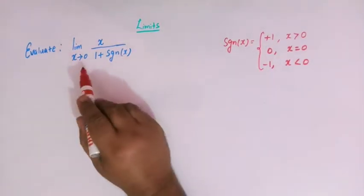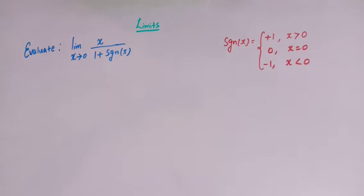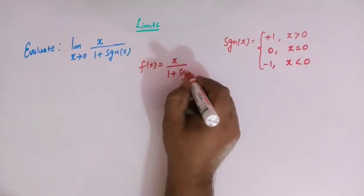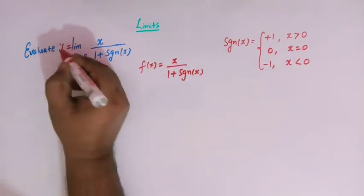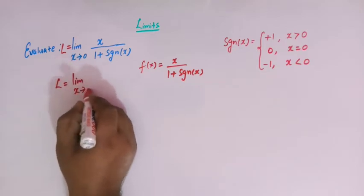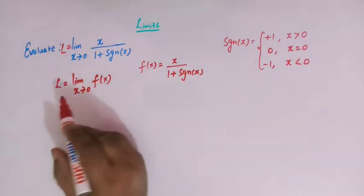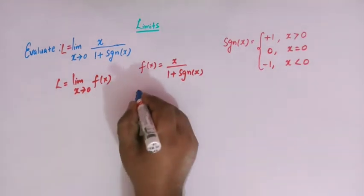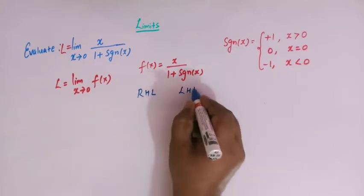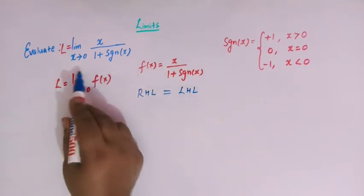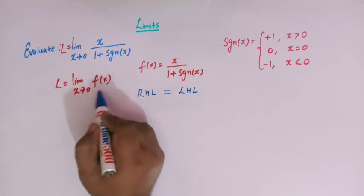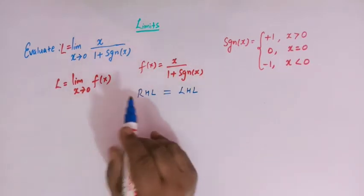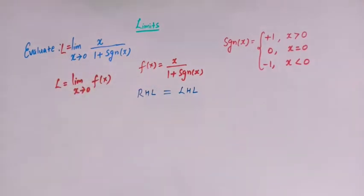We are going to utilize this definition for the evaluation of this limit. Let us take f of x equal to x over 1 plus signum of x, and let L equal the limit x tends to 0 of f of x. From differential calculus, a limit is said to exist if the right hand limit and the left hand limit both exist, are finite, and are equal.